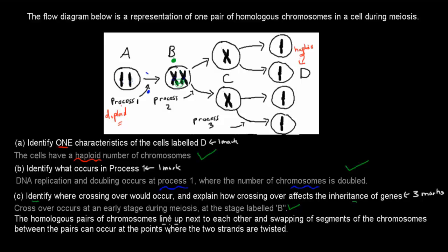Crossing over occurs at an early stage during meiosis at the stage labeled B. That's enough to get you one mark. But to get the last two marks, we've got to explain how crossing over affects the inheritance of genes. The homologous pairs of chromosomes line up next to each other, and swapping of segments of the chromosomes between the pairs can occur at the points where two strands are twisted.